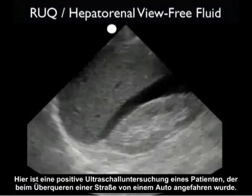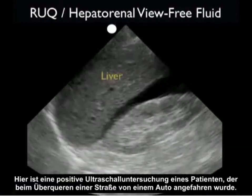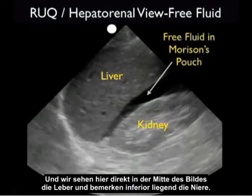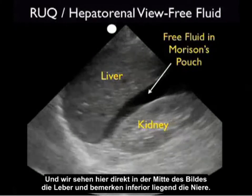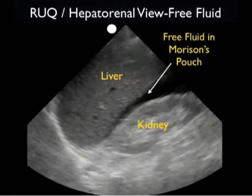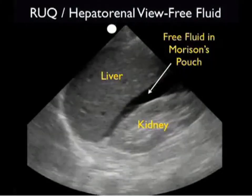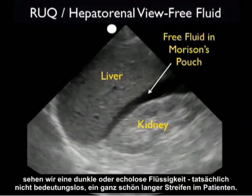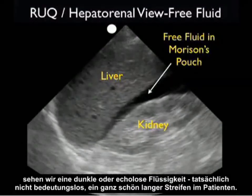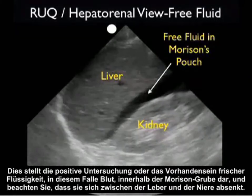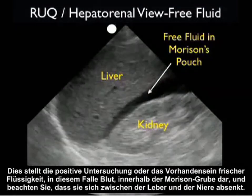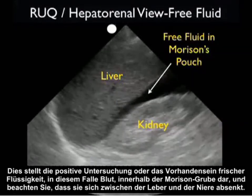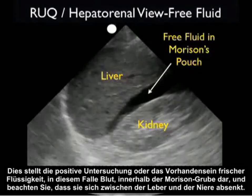Here's a positive ultrasound examination from a patient who was hit by a car while crossing the street. We see the liver in the middle of the image, with the kidney located inferior and posterior to it. In between the liver and kidney, in the potential space known as Morrison's pouch, we see a dark or anechoic fluid collection — a pretty large stripe in this patient. This represents the presence of fresh fluid, in this case blood, within Morrison's pouch, layering out between the liver and kidney.